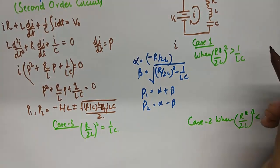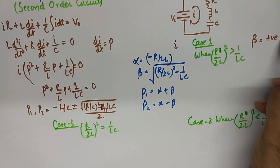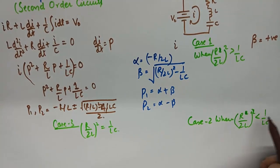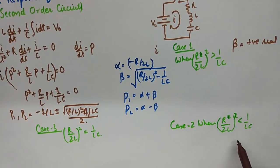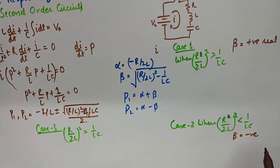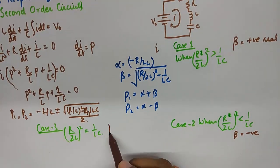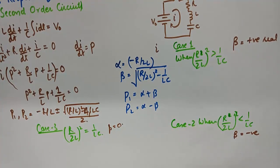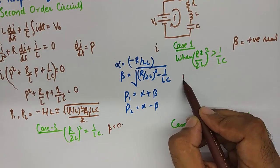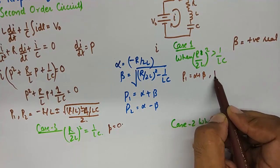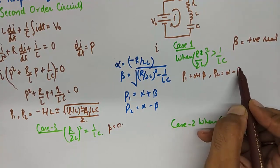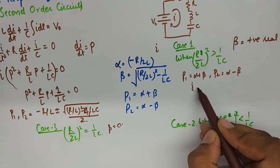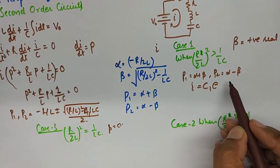So I'll paraphrase them again. Here beta is positive real. Here beta is a negative imaginary quantity. And here beta will be 0. So then we could find out the value of I because P1 will become alpha plus beta and P2 will become alpha minus beta. And the solution for this equation will be this.